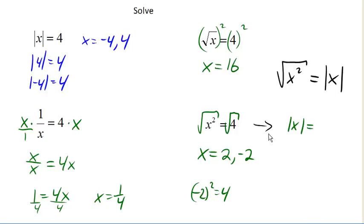And now, just like over here, where we said that if the absolute value of x is 4, then x is either positive or negative 4. Here, we can say x is either positive or negative 2.